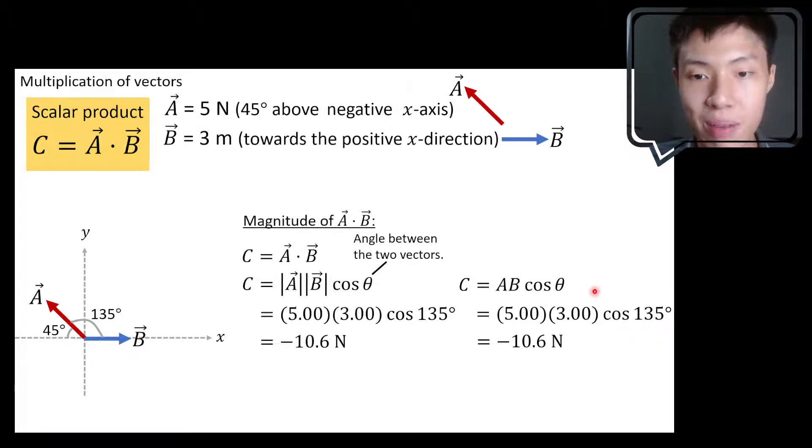But here's an important point, why do I show this example? It's because now our dot product or our scalar product produces a negative answer, magnitude. Negative answer. Magnitude. Negative answer. Is that allowed?